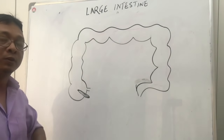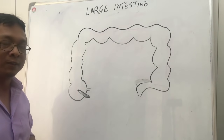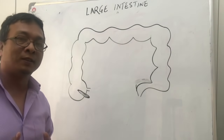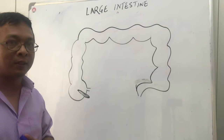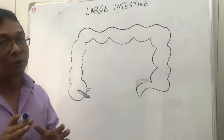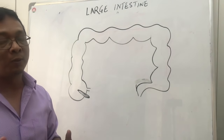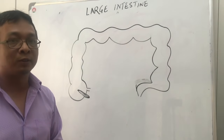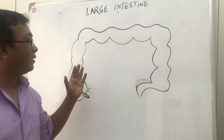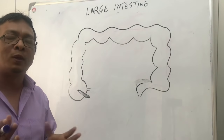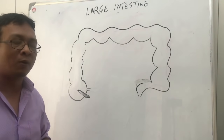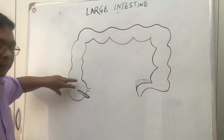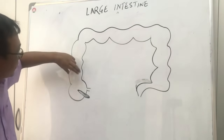Today we are going to discuss the large intestine. As the name suggests, it is larger than the small intestine but it is not longer. The small intestine is generally five to six meters long, whereas the large intestine is around 1 to 1.5 meters long. The large intestine starts at the cecum.